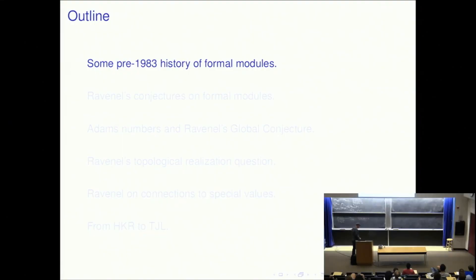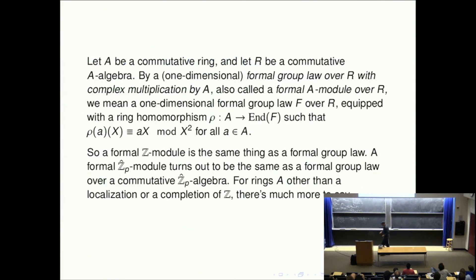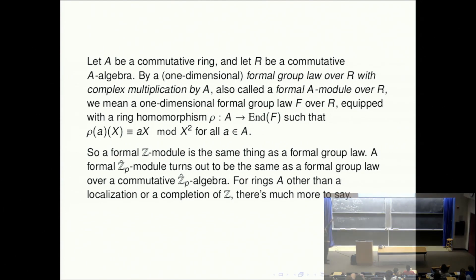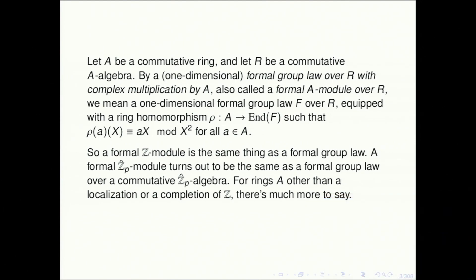Let me tell you about pre-1983 history of formal modules — how the number theorists were using formal modules. First, I should tell you what they are. What is a formal module? If A is a commutative ring and R is a commutative A-algebra, then by a one-dimensional formal A module — the full name is a formal group law over R with complex multiplication by A.